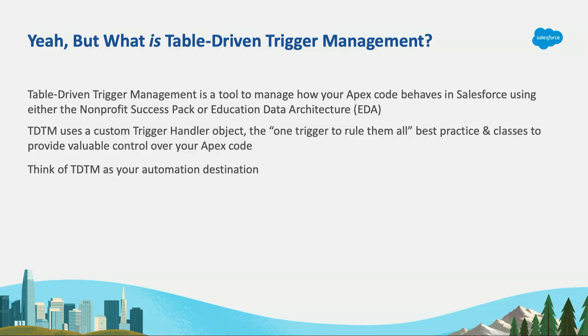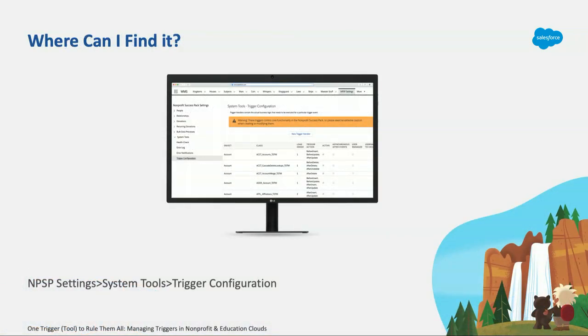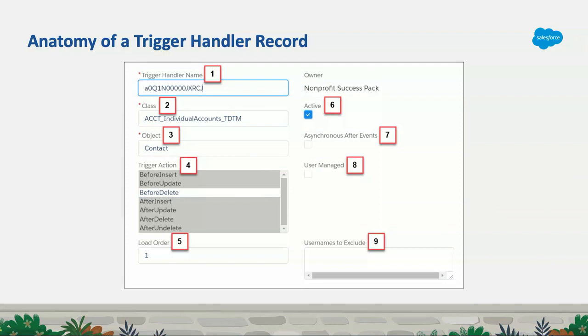Think about it as your automation destination station. Where can you find it? If you install NPSP or EDA in a dev org, you go to NPSP Settings, then System Tools, then Trigger Configuration — that is where you see all the trigger handler records that come out of the box. From here you can create new trigger handler records, but you can't edit existing ones. We'll get into that in a bit, but here's where you can see all of them in one place.